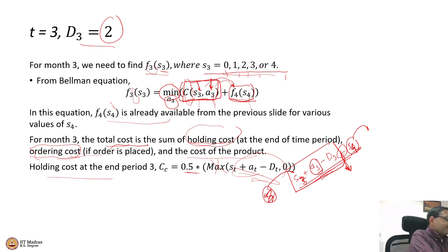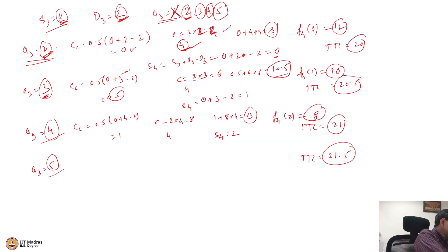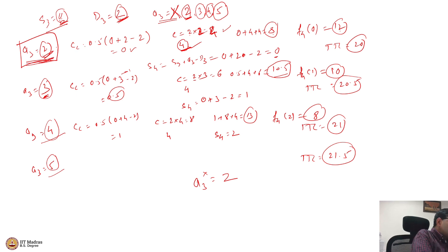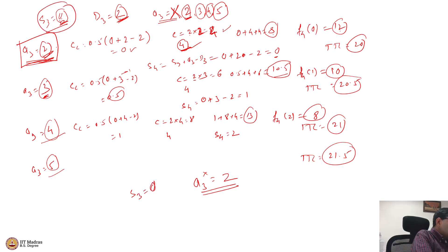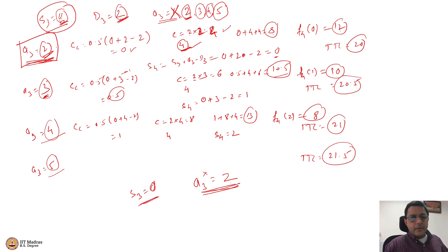Which action is most appropriate? The action that minimizes total immediate plus future cost is best. Ordering 2 products: $20. Ordering 3: $20.5. Ordering 4: $21. Ordering 5: $21.5. Therefore, A3* = 2, which minimizes total cost when S3 = 0. If S3 were a different value, this need not be the best action.